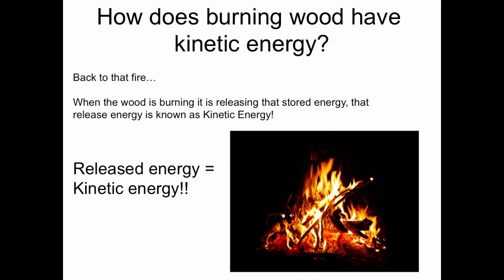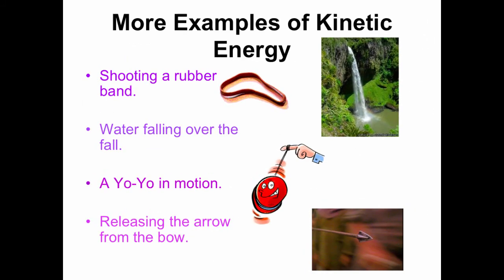Remember the law of conservation of energy: energy cannot be created, nor can it be destroyed — it can only be changed and transferred. More kinetic examples: shooting a rubber band (not stretching it, which is potential, but shooting it), water flowing over a waterfall (the water at the top is potential; the water actually falling is kinetic), the yo-yo in motion, and releasing the arrow. Notice all these examples mirror the potential ones, showing how easily potential and kinetic convert back and forth.